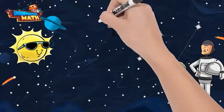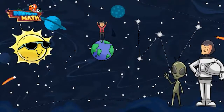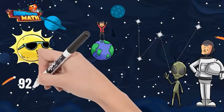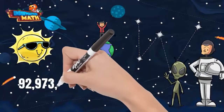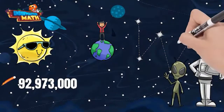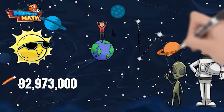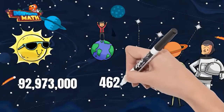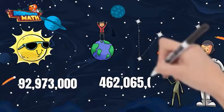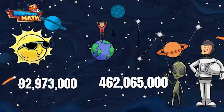Let's try an example. Earth is 92,973,000 miles from the Sun. Jupiter is 462,065,000 miles from the Sun. Which planet has a greater distance from the Sun?